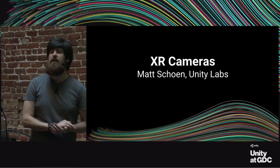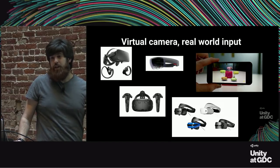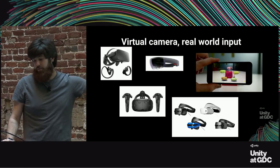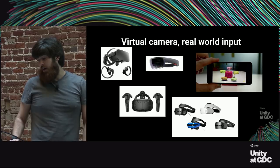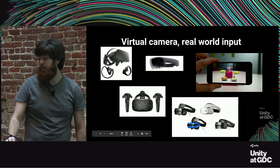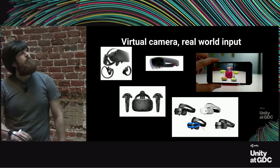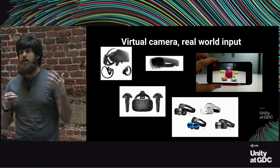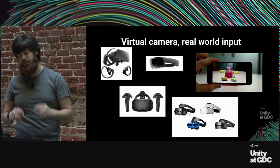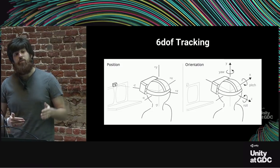I'm going to be focusing today on XR cameras. When I talk about an XR camera, what makes it special is that we have a virtual camera with real-world input. We have some different devices you might be familiar with: an Oculus Rift, HTC Vive, Microsoft HoloLens, some Microsoft Windows Mixed Reality devices, and a smartphone with augmented reality capabilities. All of these give us a view into a virtual scene using some real-world object to track the position and rotation of the camera. We call that tracking six DOF, or six-degree of freedom tracking.